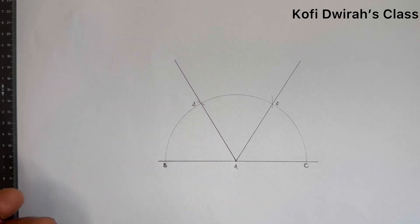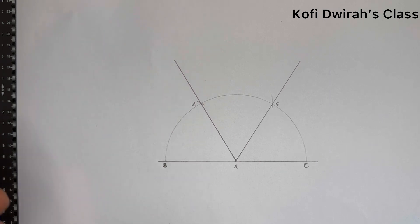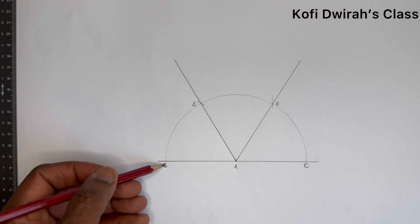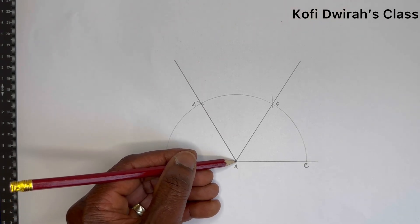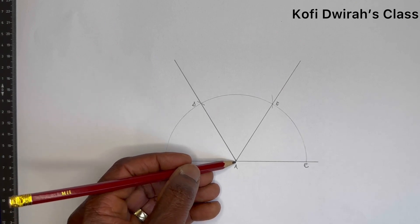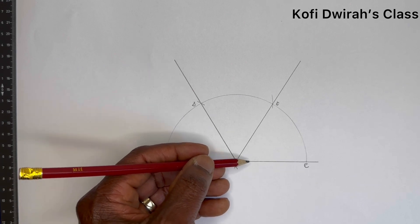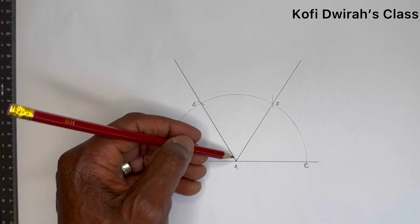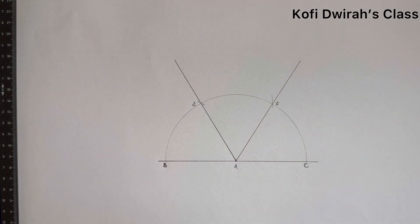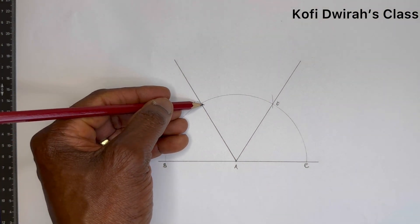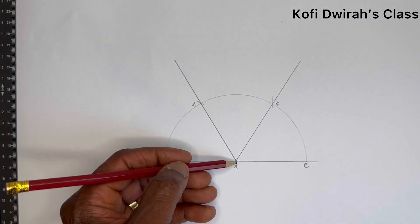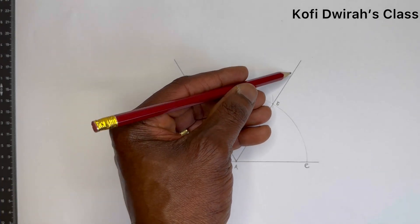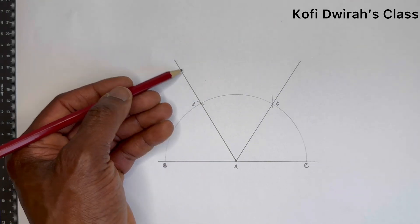This is how to trisect an angle — that is, to divide the angle into three equal parts. With this construction, after drawing line BC which is 180 degrees, choose point A. Open your compass to the distance from A to C or B, draw an arc. With the same radius at point B, draw an arc. With the same radius at point D, draw another arc. Then draw a straight line from A through E, and from A through D.